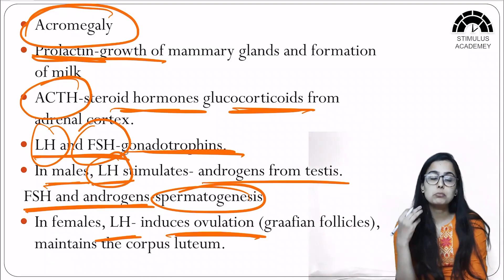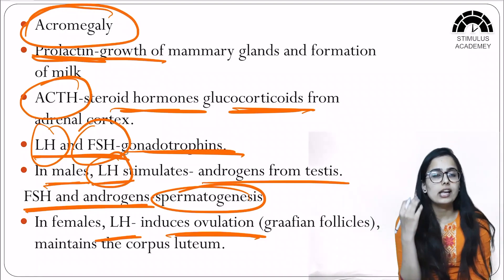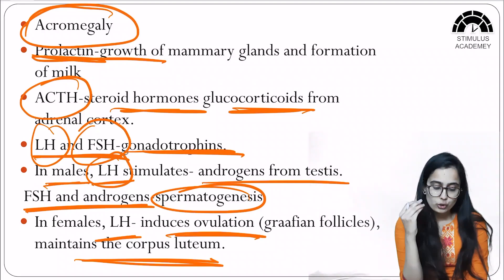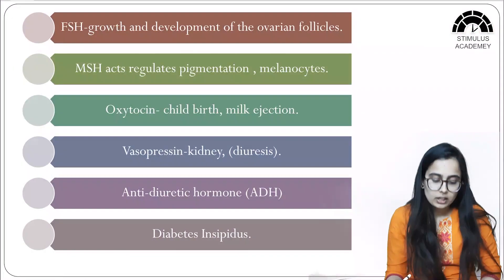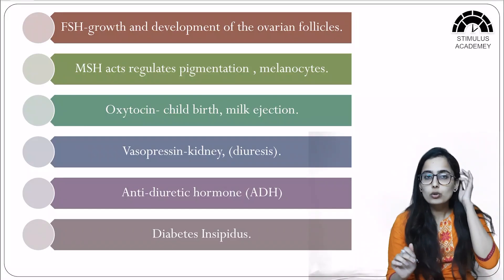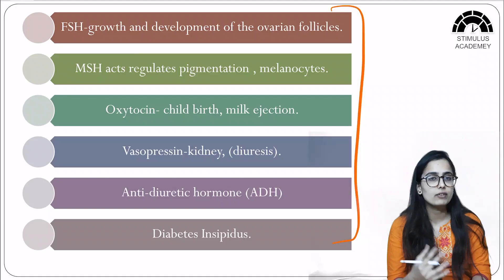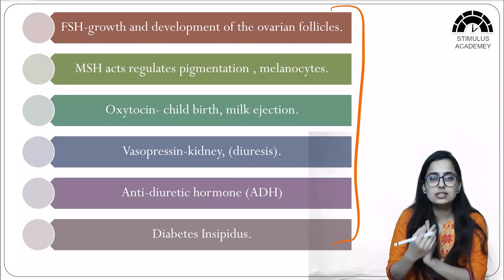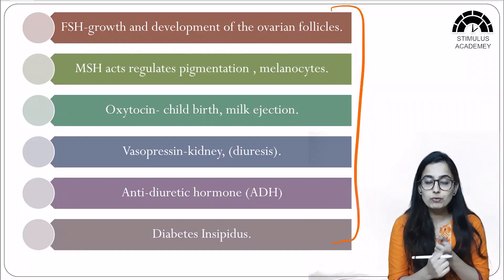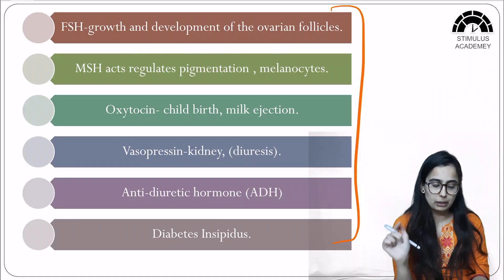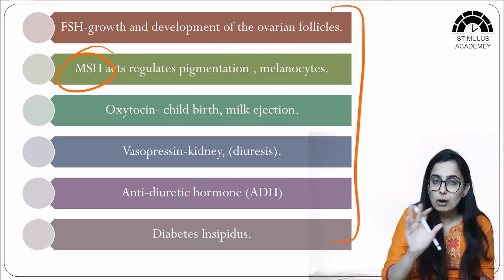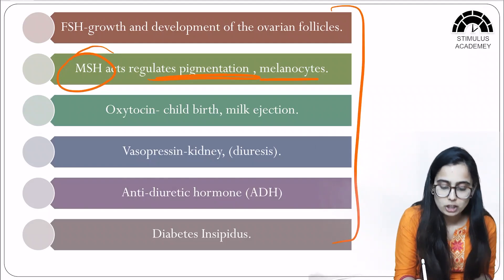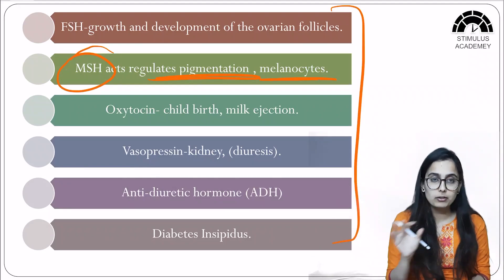In females, LH induces ovulation — the release of mature Graafian follicles — and also helps maintain the corpus luteum, which is the degenerating Graafian follicle. FSH in females is involved in the growth and development of ovarian follicles. MSH (melanocyte stimulating hormone), produced by pars intermedia, acts on melanocytes — special skin cells — and regulates pigmentation.